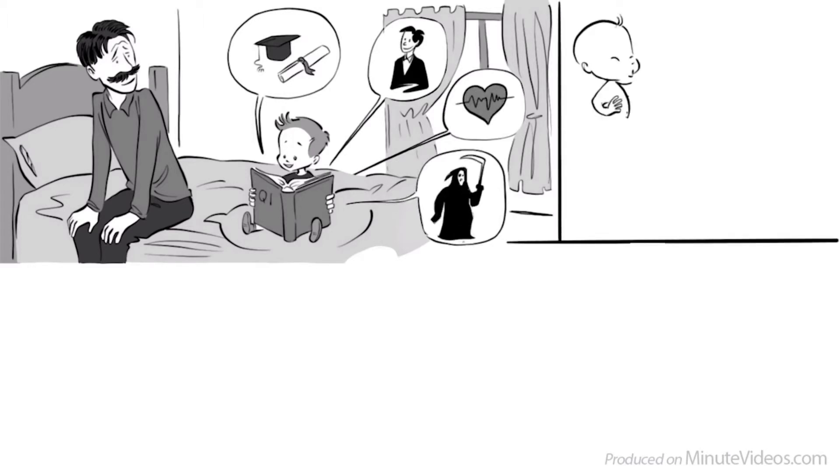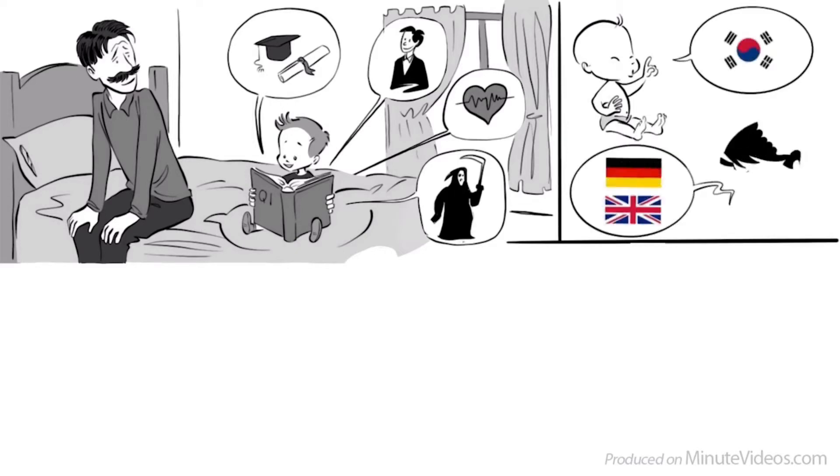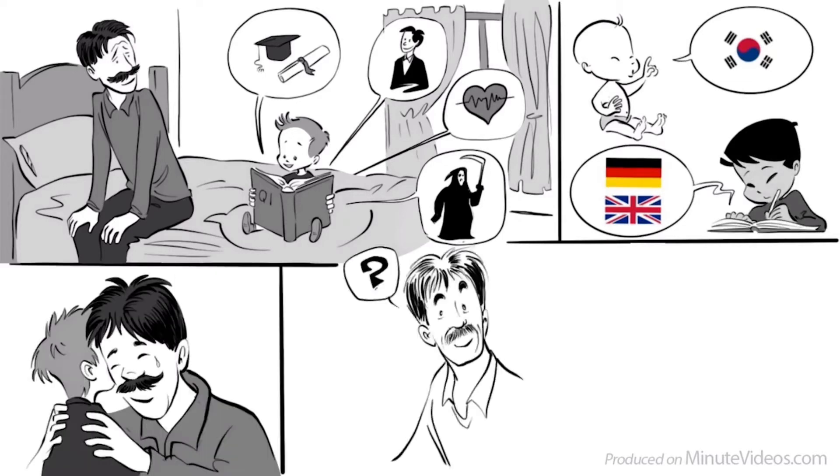His favorite story is Kim Ung-young, a Korean with an official IQ of 210. Just six months old, he was already speaking fluent Korean, and at age three wrote essays in German and English.